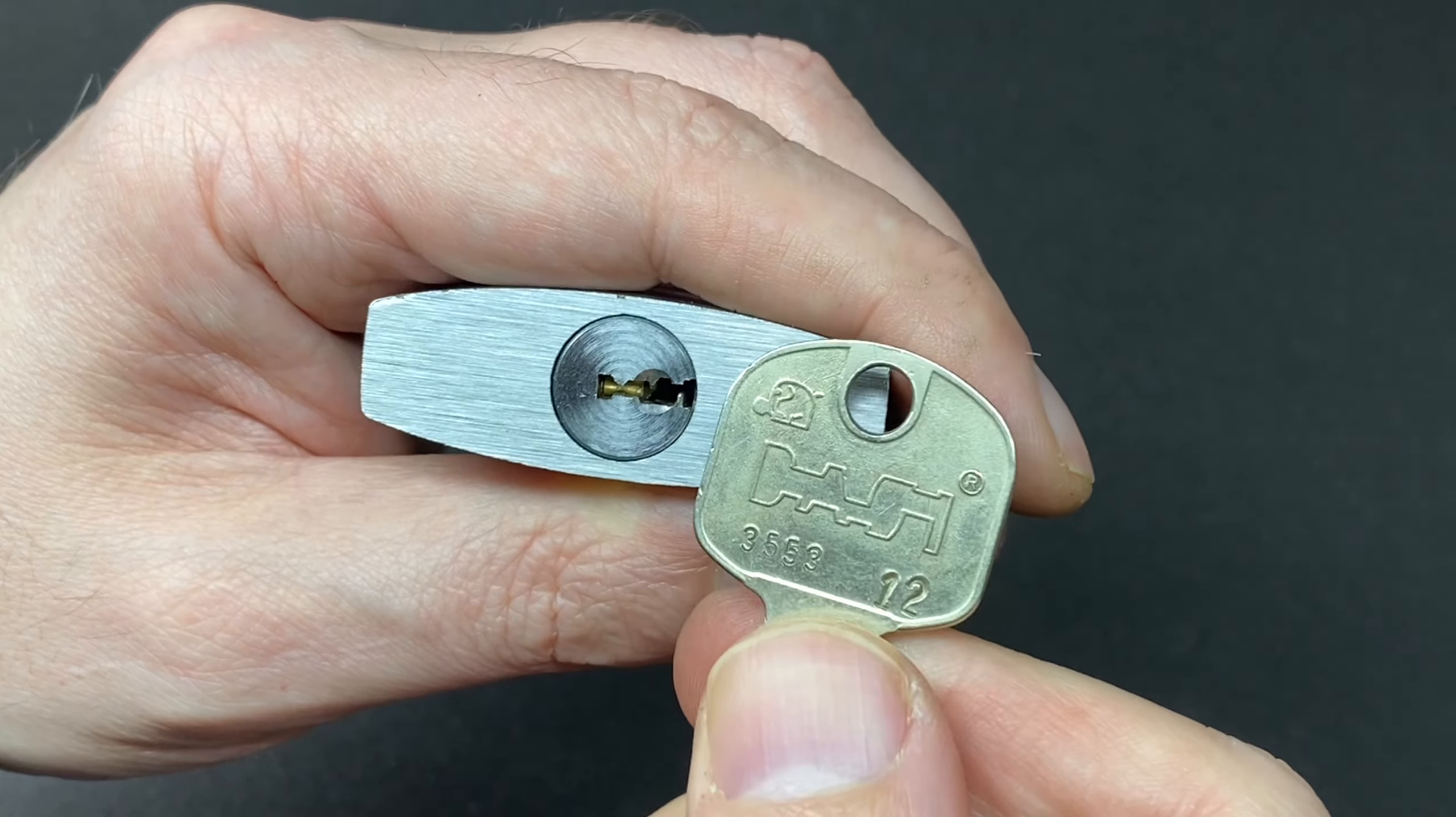I'm going to pop a top-of-the-keyway turner in, 1.3 millimeters at the very top of this since the warding allows it. It's almost like a perfect fit, and we're going to then use this gem. Let's go in and see what we can feel in there.